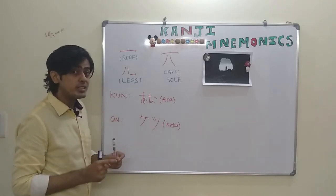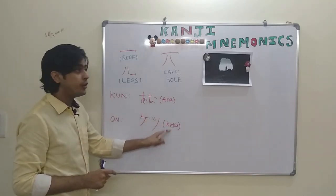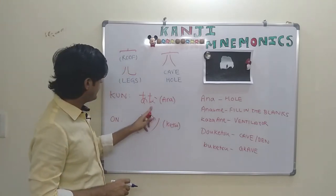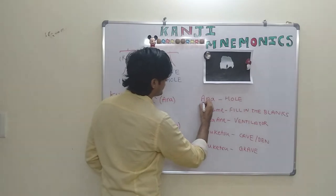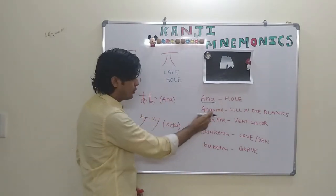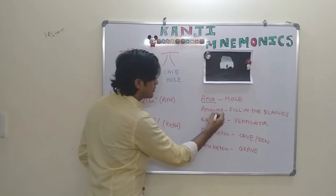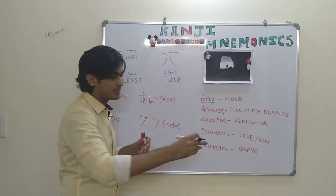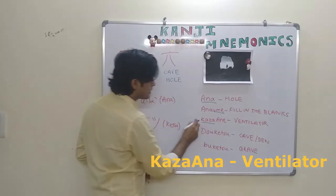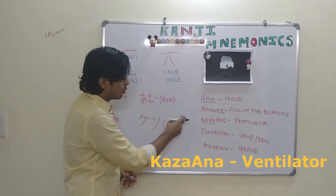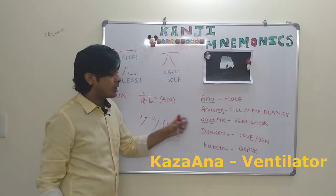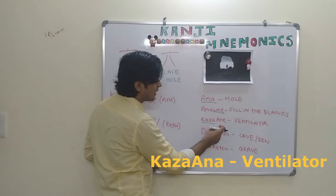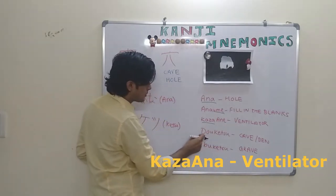Now we will form some common words using this on reading and kun reading which will be helpful for your regular conversation. The common words associated with the kun reading are ana, which means hole. Second word is ana ume. This ume word means to fill and ana ume means fill in the hole or fill in the blanks. Kaza ana. This kaza means wind. Previously we have learnt that the kanji pronunciation for wind is kaze, but the other way of pronunciation is kaza. So kaza ana is ventilator.